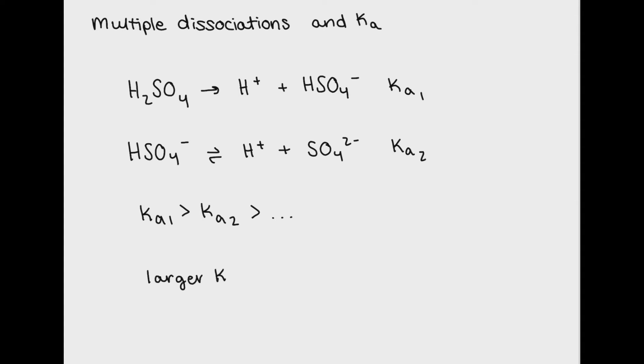You can also think about it the other way. If you have a large Ka value, this means it completely or close to completely dissociates, meaning it's a stronger acid. As the acid donates more and more hydrogen, it's getting weaker and weaker.